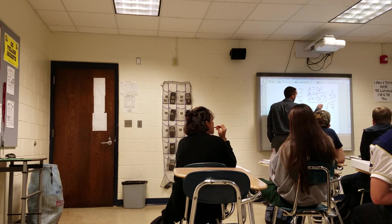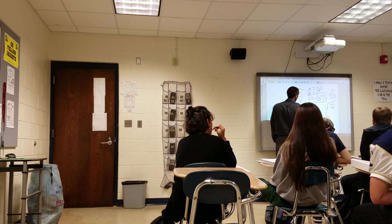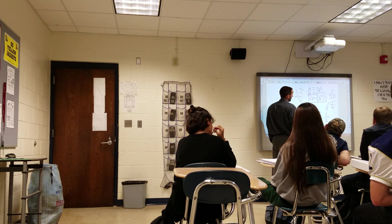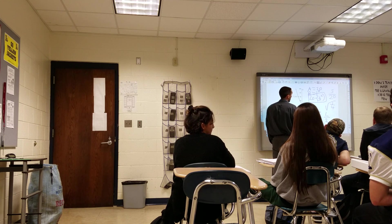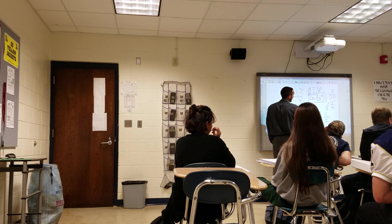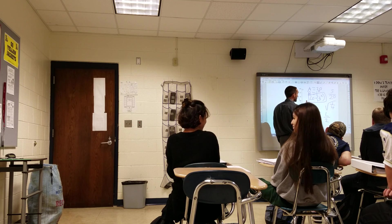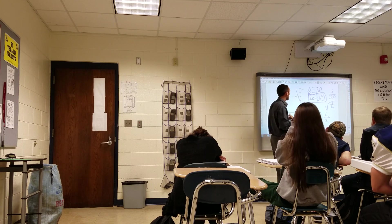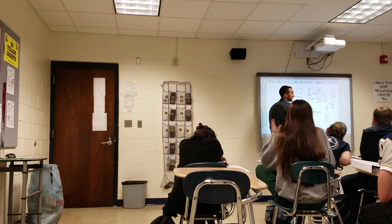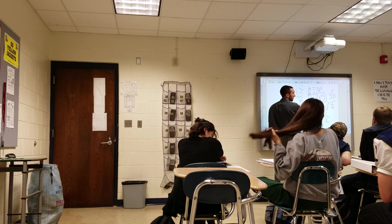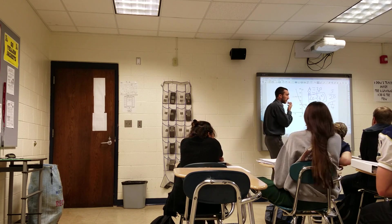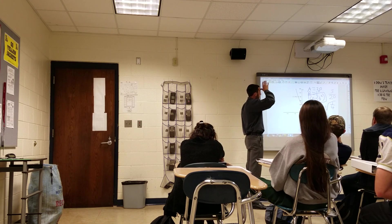He got the square root of 1 fourth because he did 5 over 20, set up a ratio, then took the square root. Square root because it happens to be at X equals 2. But if it were X equals 5, you wouldn't be able to do the square root because it wouldn't be the square term — it would just be the normal ratio.